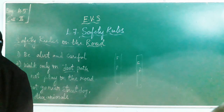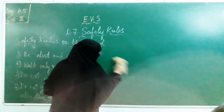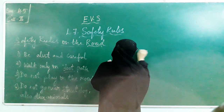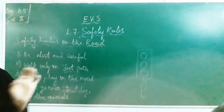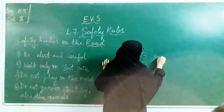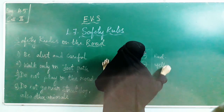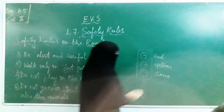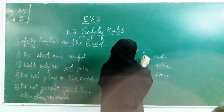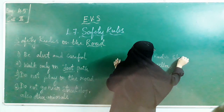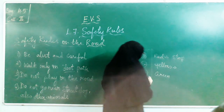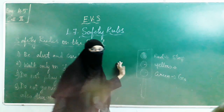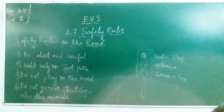Try to follow the traffic signals. We mainly have three traffic lights. When the traffic light is red, you have to stop. If the traffic light is yellow, be ready. If the traffic light is green, go — you can go when green is shown. These are the safety rules on the road.